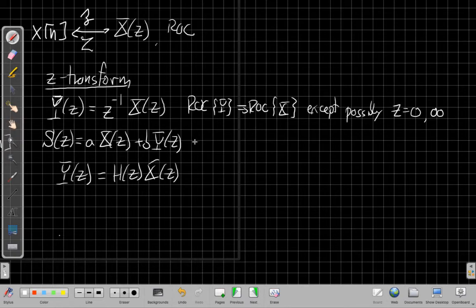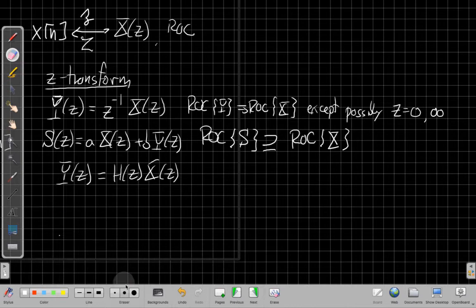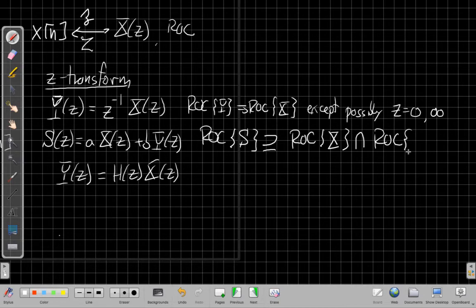When we add two things, ROC of S has to be at least as big as the intersection of the individual ROCs. So I have to take the intersection of the two and then say, it'll be at least as big. You can sometimes have what we call pole zero cancellation and have it get bigger. But it's always going to converge everywhere where if both terms are finite, the sum will always converge where they both did.